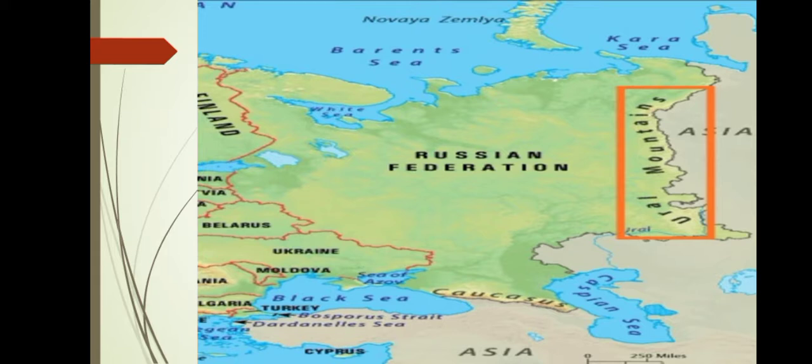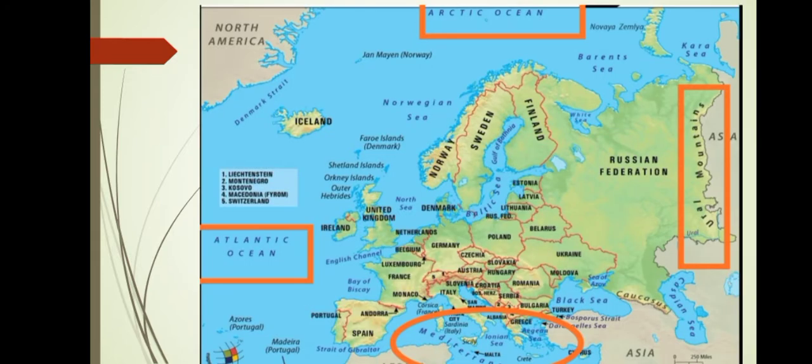Now, identify all the boundaries of Europe. To the north: Arctic Ocean. To the west: Atlantic Ocean. To the south: Mediterranean Sea. To the east: Ural Mountains.